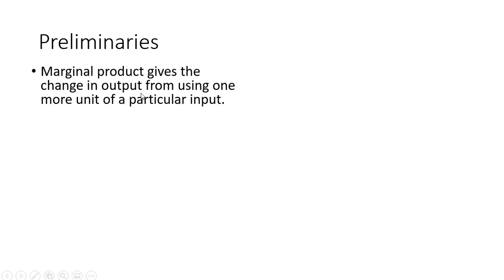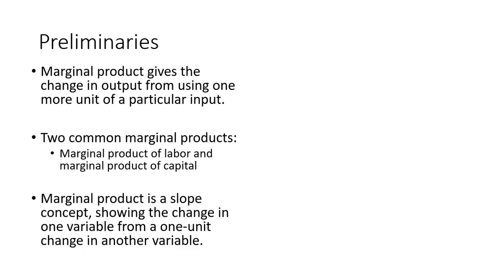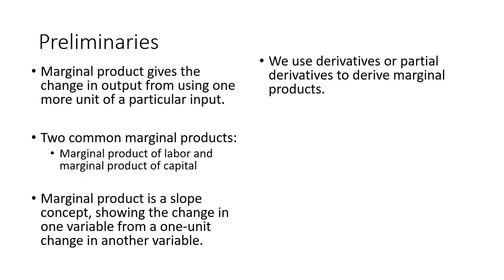The preliminaries. Marginal product gives the change in output from using one more unit of a particular input. There are two common marginal products: the marginal product of labor and the marginal product of capital. The marginal product of labor gives the change in output from using one more unit of labor, while the marginal product of capital gives the change in output from using one more unit of capital. Marginal product is a slope concept showing the change in one variable from a one-unit change in another variable. So the change in output divided by the change in labor is a way of thinking about marginal product. But in terms of calculus, a slope is nothing more than a derivative or a partial derivative, and that's how we're going to derive our marginal products.